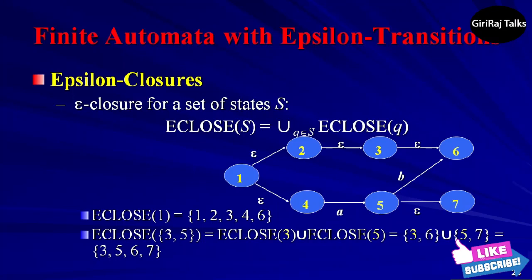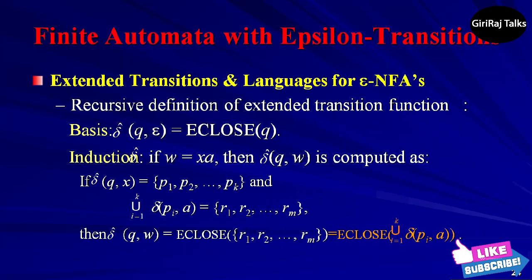We sometimes need to apply the epsilon closure to a set of states S, taking the union of the epsilon closures of the individual states. That is, ECLOSE(S) = union of q in S ECLOSE(q). The next topic is extended transitions and languages for epsilon-NFA.